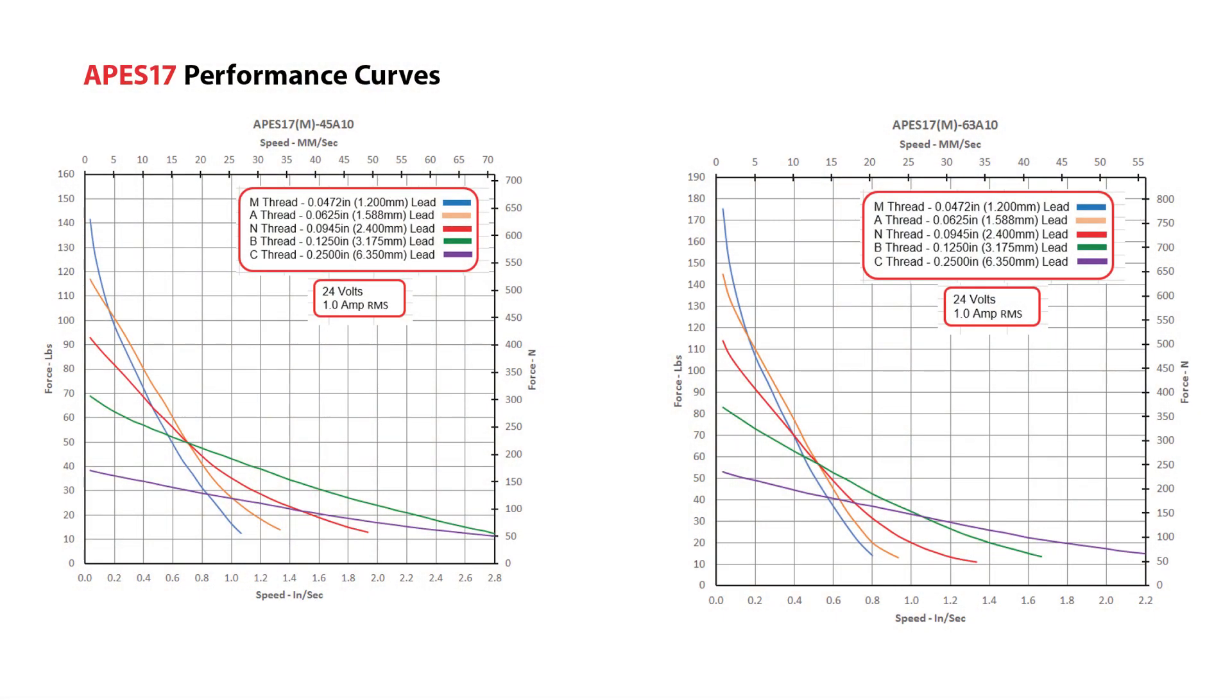This speed force curve shows the maximum force for various configurations of lead screw threads. This example shows the NEMA 17 frame APES 17 with M threads, the blue line, capable of producing a maximum force of over 1000 Newtons or 225 pounds.